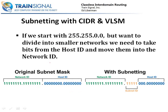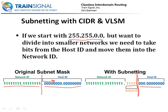Let's look at how we would subnet using these new concepts. If we start with a Class B range, meaning 255.255.0.0 as our subnet mask, but we want to divide into smaller networks, we're going to take some bits from the host ID and move them into the network ID. We have 16 ones and 16 zeros, and we're going to move the line to satisfy the 2,000 computer requirement. The ones that have joined the network ID we'll call the subnet ID, and the host ID is now a smaller range of bits.